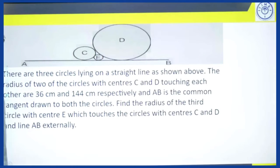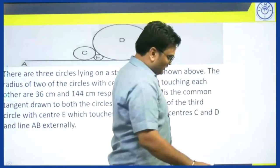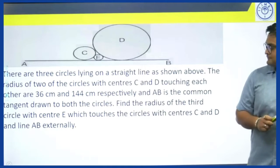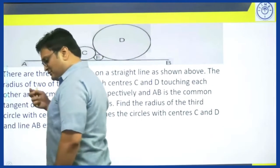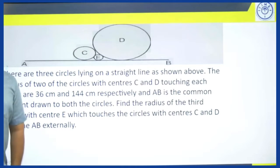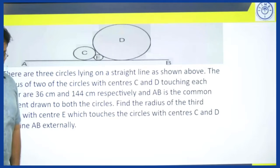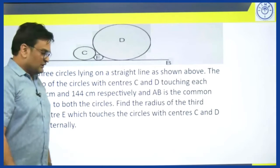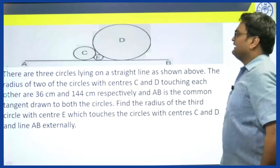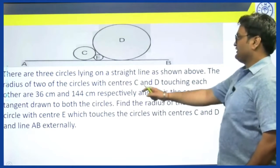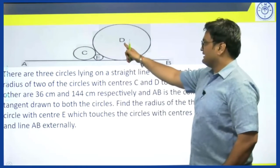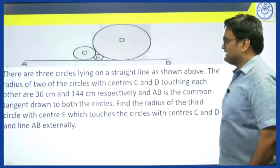So this is the question. You can have a look at it, pause the screen and try it out. I give you around 4-5 minutes for this question, however I would be starting the discussion immediately. What does this question say? It says there are 3 circles lying on a straight line, line AB as shown. The 3 circles have centres D, E, and C.